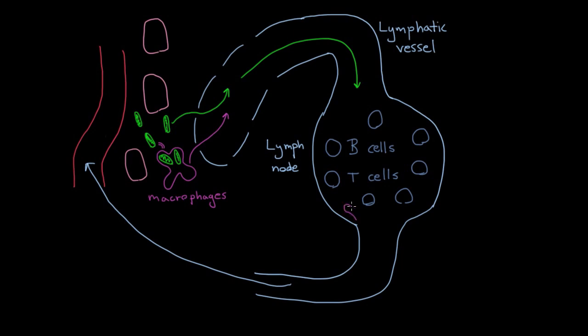So this lymph node acts as a filter for the lymph which is passing through here. And it filters, actually it also has some macrophages here that are going to help gobble up some of the bacteria that might be floating through. And so in sum, I think we're left with something that's really a very elegant system.